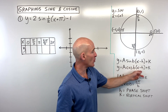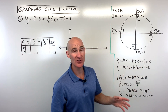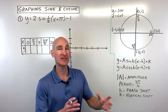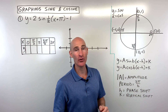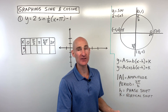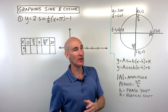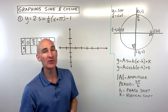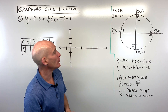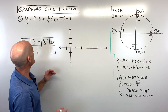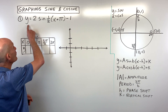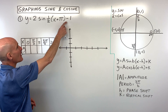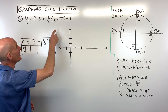Keep in mind the one grouped with x is going to have the opposite effect from what you see: if it's minus π it's going to go right π, if it's plus π it's going to go left π. So let's go through these four examples. The first example: y equals 2·sin(½x + π) - 1.